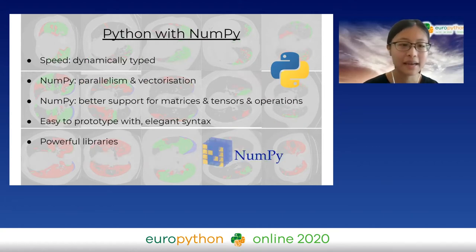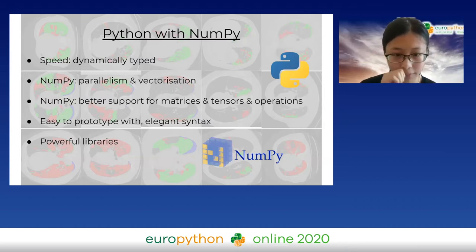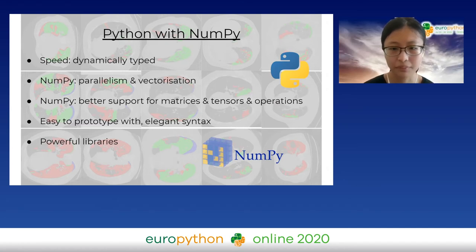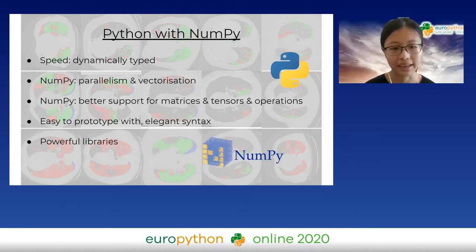Why NumPy? NumPy is very fast compared with vanilla Python because it utilizes techniques such as parallelism and vectorization. It also has broad support for matrices, tensors, and math operations, which is very useful when dealing with AI. It also retains the benefits of Python itself, such as elegant syntax.